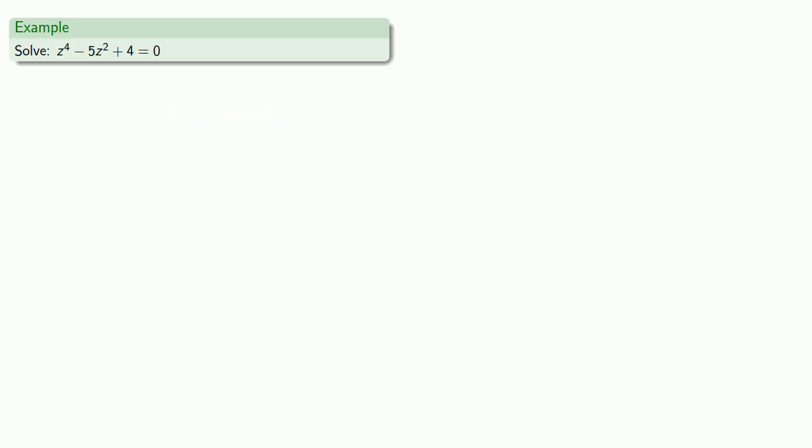But remember, it doesn't matter if you don't succeed at first, what matters is if you succeed at last. Keep trying until you find something that works. So let's try to solve z to the fourth minus 5z squared plus 4 equals 0.